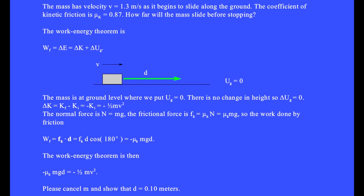The work-energy theorem is then minus mu k mgd equals minus one half mv squared. Cancel m and the result is d equals 0.10 meters.